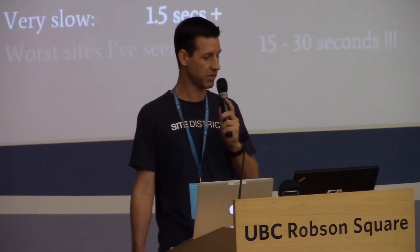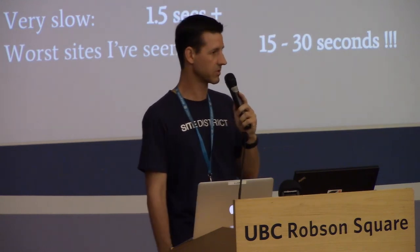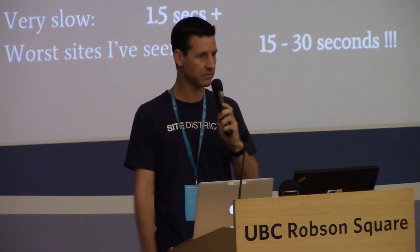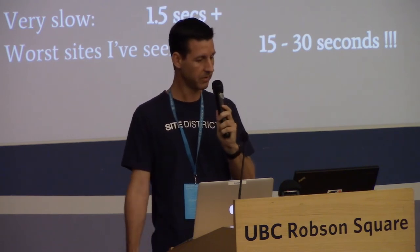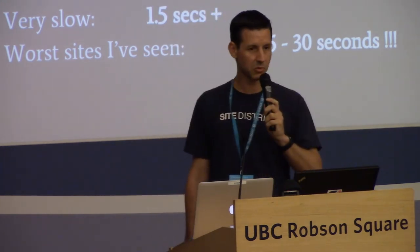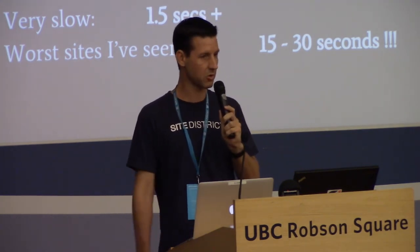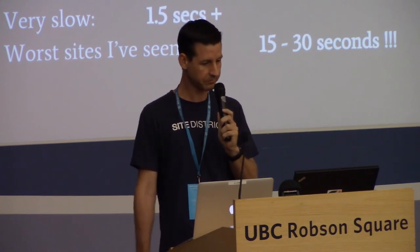Obviously faster is better. We're interested in Time to First Byte with page caching turned off. I consider Very Fast to be 50–150 milliseconds. Fast is 150–300 ms, Good is 300–500 ms, and then it gets into Slow and Very Slow territory. Some of the worst sites take 15 to 30 seconds or more to return that HTML — your visitor is staring at a blank screen. Under 500 milliseconds is a pretty good target for WordPress.